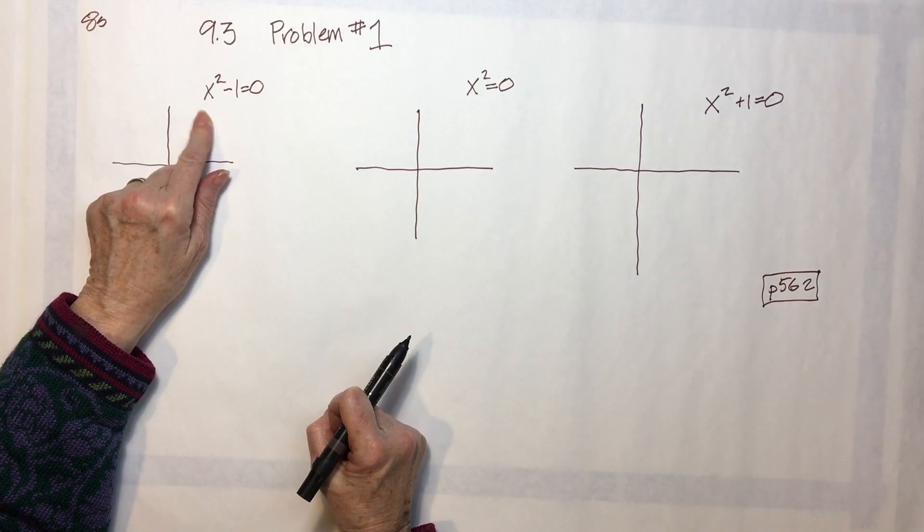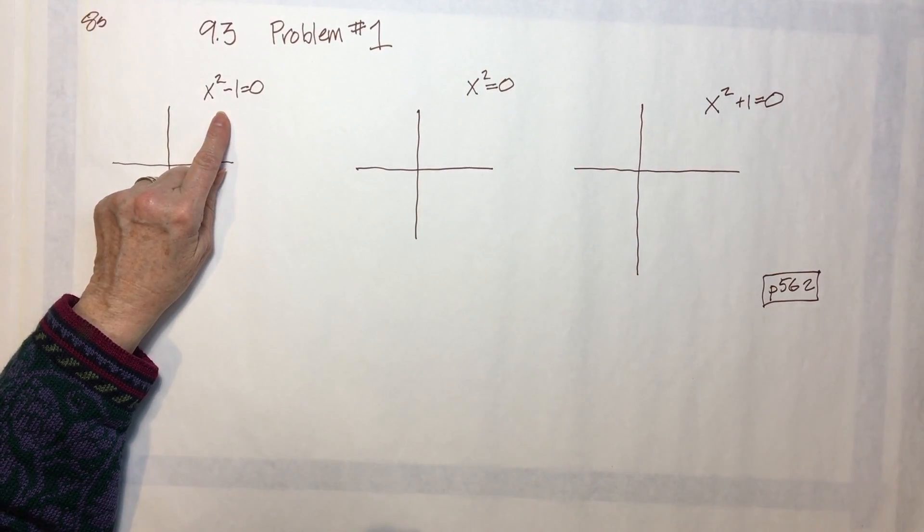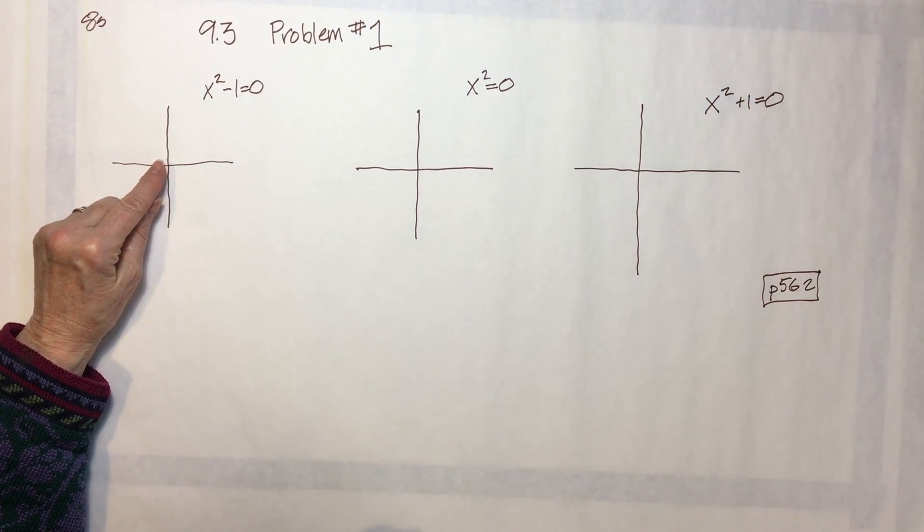Up here, x squared minus one - there is no bx here, so this parabola is going to center on the y-axis. That is your axis of symmetry.